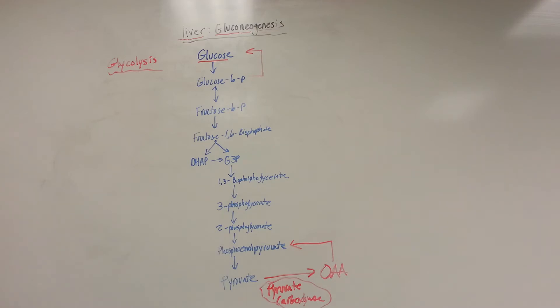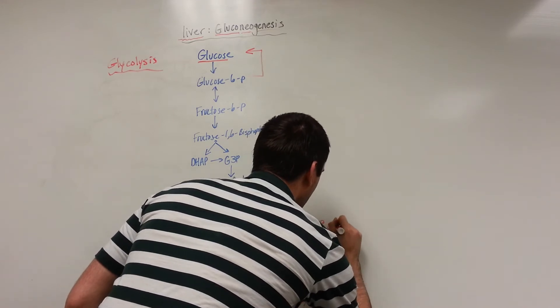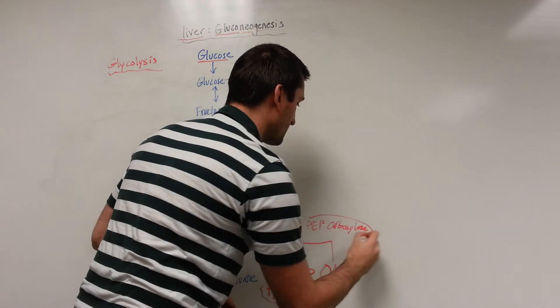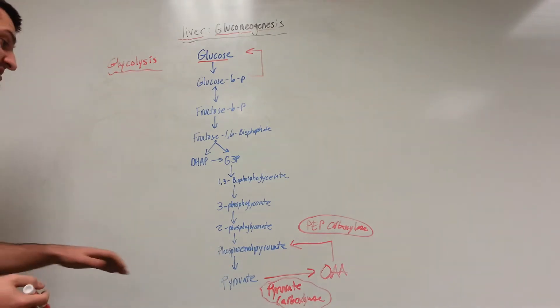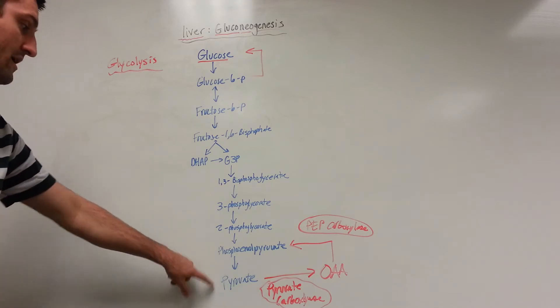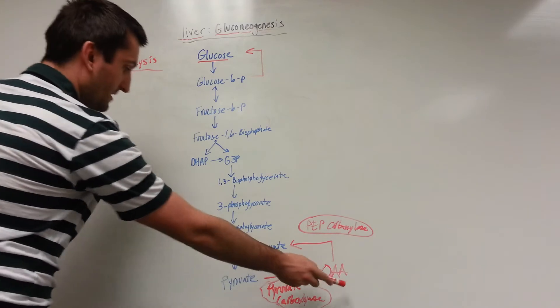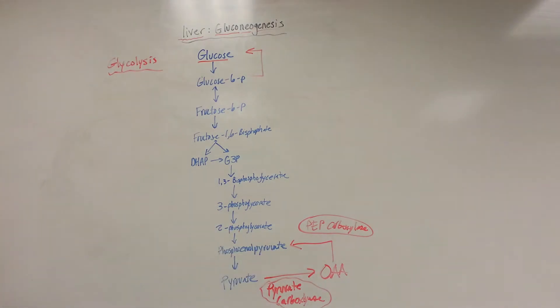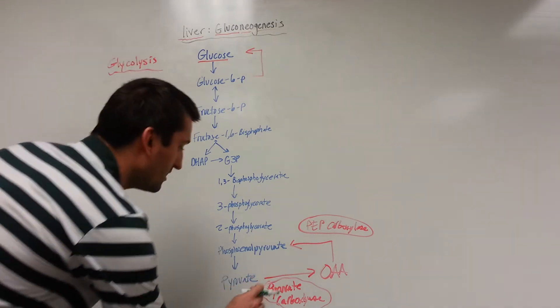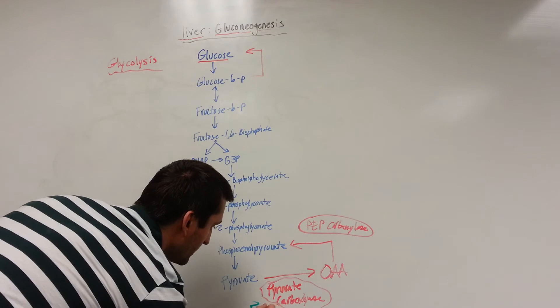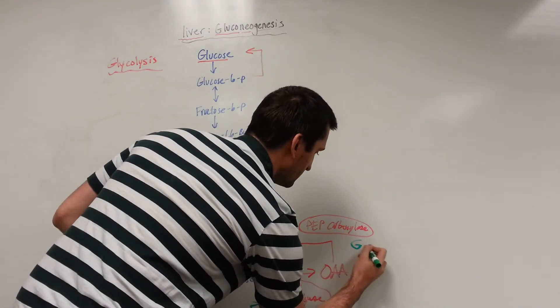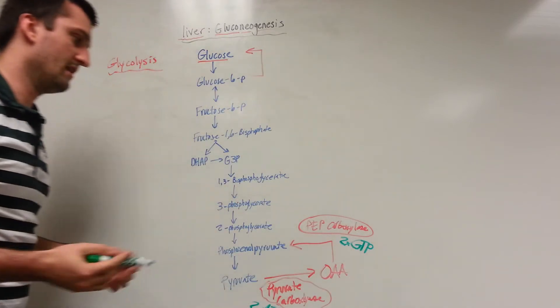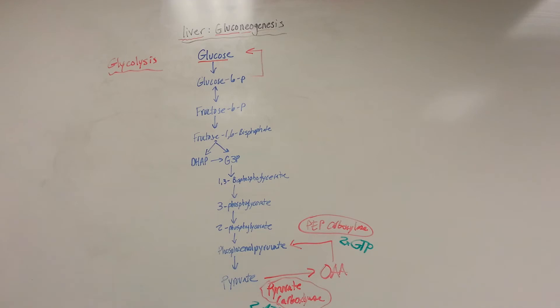That's going to be through the enzyme PEP carboxykinase. So PEP carboxykinase will convert the OAA into PEP. It's worth noting that it's not a one enzyme reaction that will convert pyruvate to PEP - we have to go through an intermediate which is OAA. Also, the conversion of pyruvate to glucose requires a total of six ATP equivalents. The pyruvate carboxylase reaction will require two ATP, while the PEP carboxykinase will require two GTP, which is the equivalent of an ATP just in GTP form.